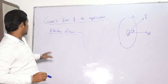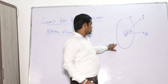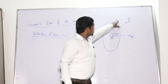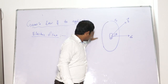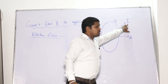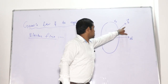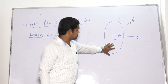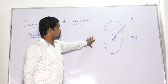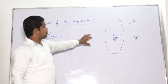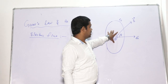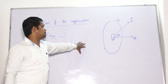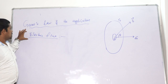So regarding electric flux, before going to the concept of electric flux, let us consider a surface S. This surface S is present in a non-uniform electric field — that is a very important point. Whatever electric field I have shown here is a non-uniform electric field, and this surface S is present in this non-uniform electric field. Our aim is to find out the amount of electric field lines passing through this total surface S. And this is nothing but electric flux.